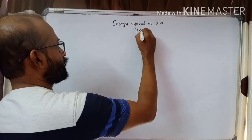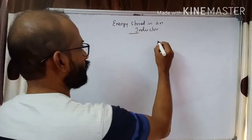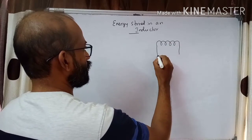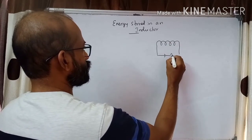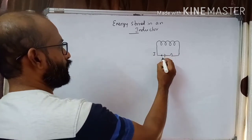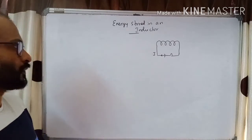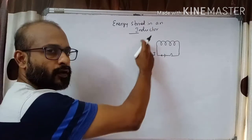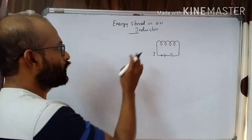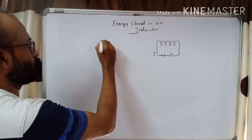In an inductor, energy is stored in the form of a magnetic field. We have a solenoid connected to a cell, and suppose we have a switch to vary the current. Let I be the current and E be the EMF induced. When we switch on or switch off, there will be a change in magnetic flux and an EMF will be induced in the coil. We need to find the expression for the energy stored.